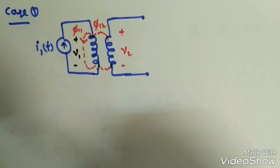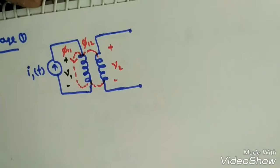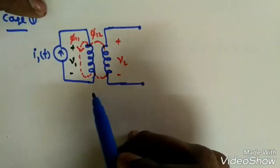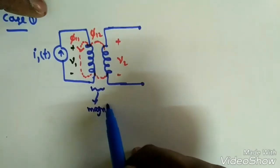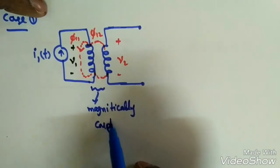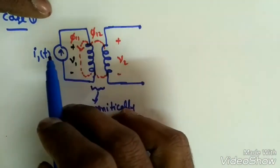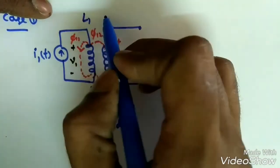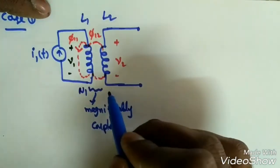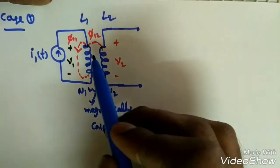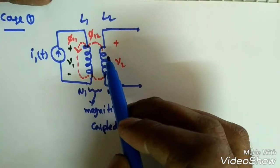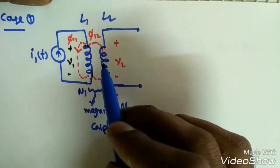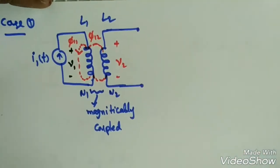Even though these two coils are physically not connected, they are magnetically coupled — that is why it is called a magnetically coupled circuit. The magnetic flux caused by current in one coil links with the other coil, thereby inducing voltage in the later coil.